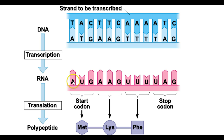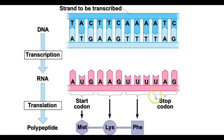In this case, AUG is the start codon and it signals the amino acid methionine. AAG stands for lysine. UUU stands for phenylalanine. And UAG is a stop codon — it's like the period at the end of a sentence. And that's going to make up our polypeptide.